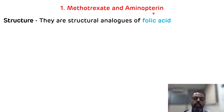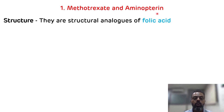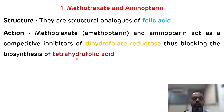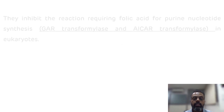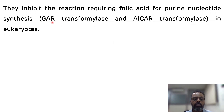The mechanism of action of methotrexate and aminopterin: both drugs will act as competitive inhibitors of an enzyme known as dihydrofolate reductase. This enzyme is required for the conversion of dihydrofolate into tetrahydrofolate. Tetrahydrofolate is the active form of folic acid. By blocking the synthesis of tetrahydrofolate, this drug will inhibit particular steps in purine nucleotide synthesis which require folic acid — steps catalyzed by glycinamide ribonucleotide transformylase and aminoimidazole carboxamide ribonucleotide transformylase.